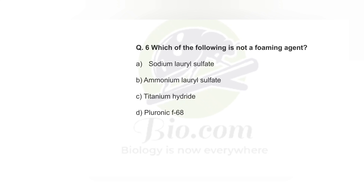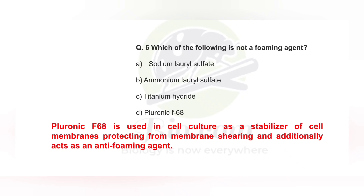Now, which of the following is not a foaming agent? The correct answer for this question is Option D: Pluronic F68. Pluronic F68 is basically used in cell culture as a stabilizer that reduces chemical stress on the membrane. It is an anti-foaming agent, not a foaming agent — meaning it prevents foam formation. So the correct answer is D, Pluronic F68, because it is an anti-foaming agent.